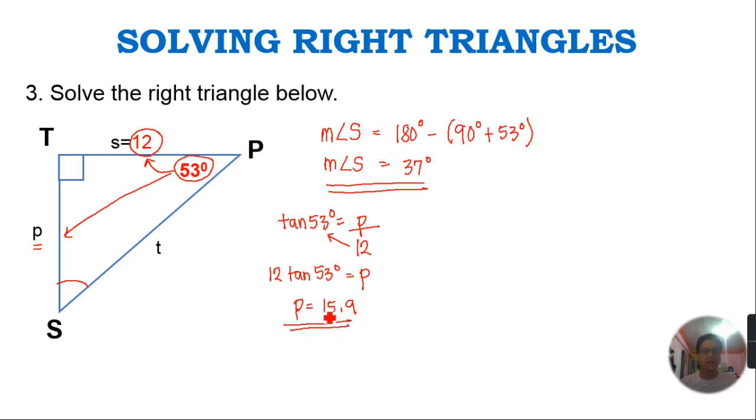Now let's solve for T. Looking at our angle which is 53 degrees, we're going to choose which of the three trigonometric ratios is applicable: sine, cosine, or tangent. We can say that this is the hypotenuse and 12 is adjacent, so that will be cosine. So cosine 53 degrees equals adjacent, that is 12, over hypotenuse, so that is T.